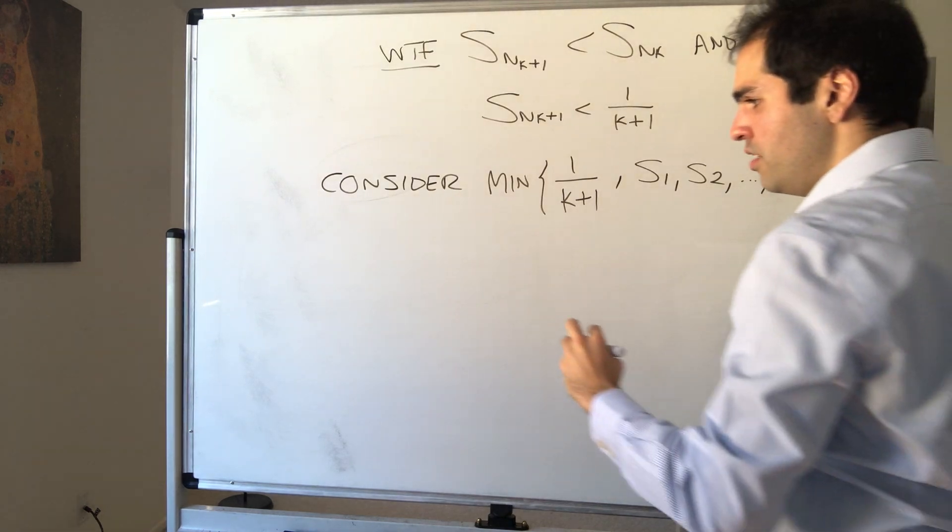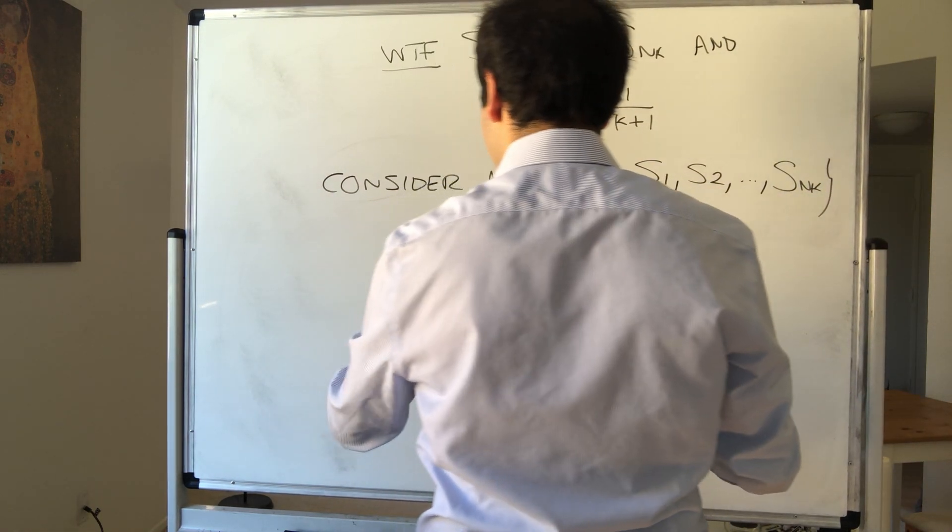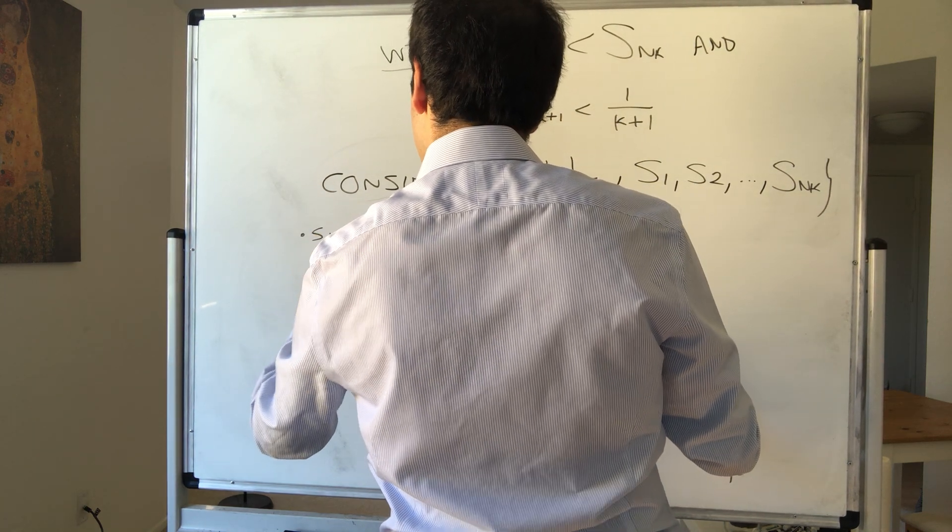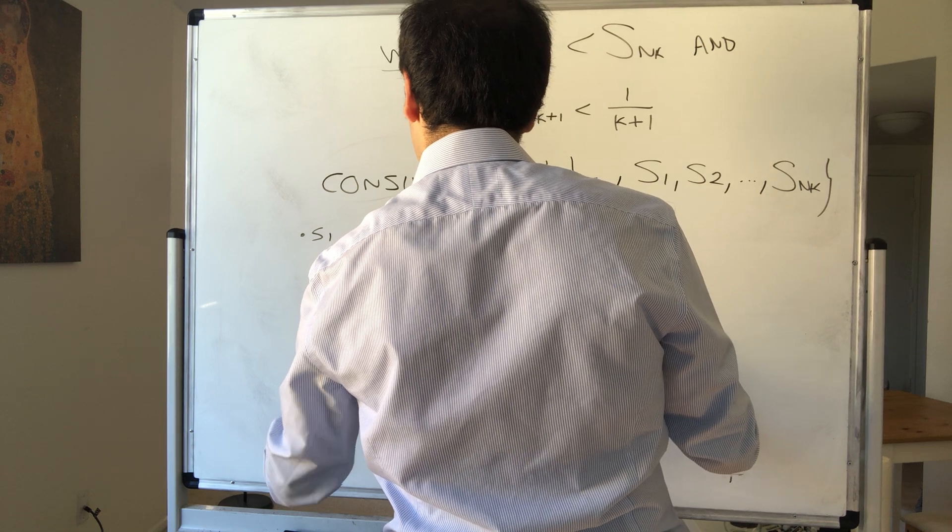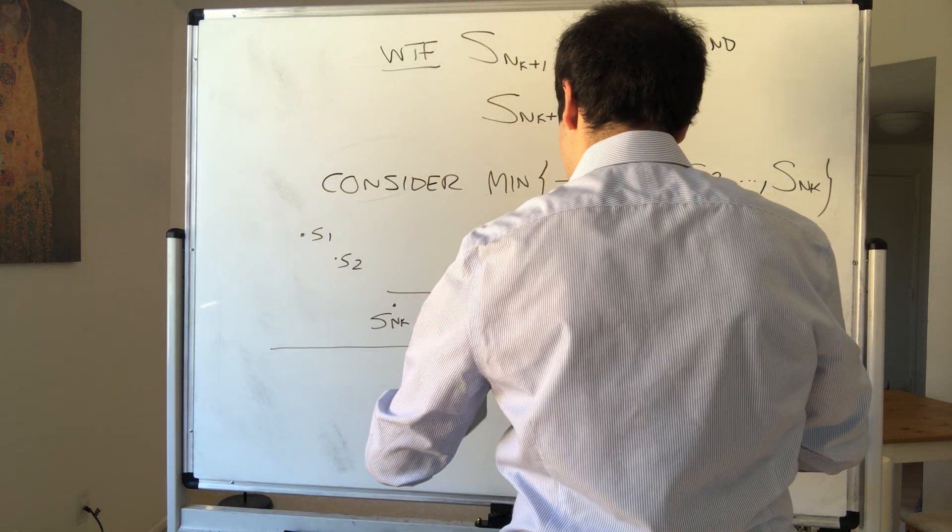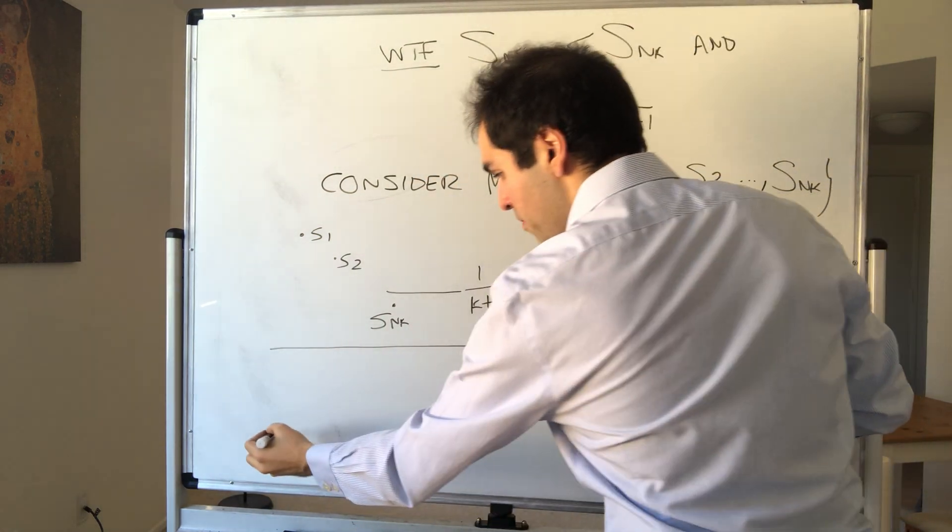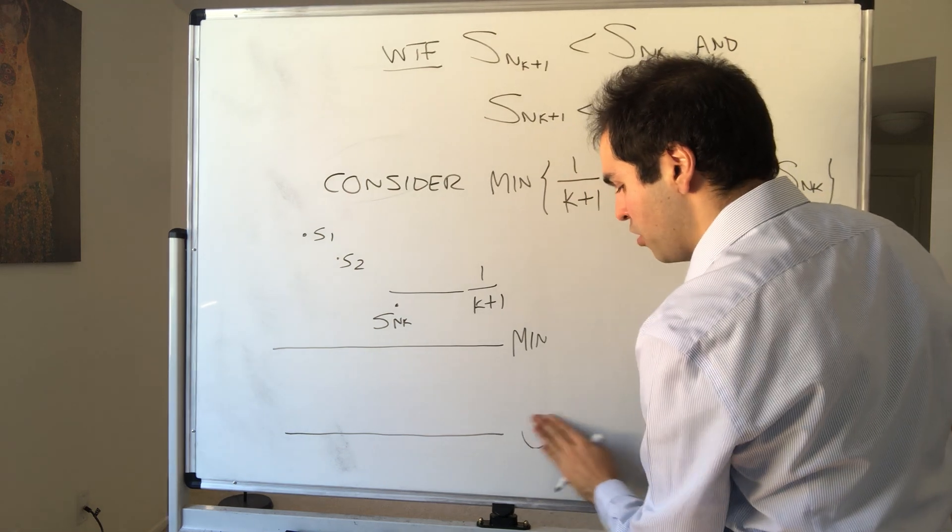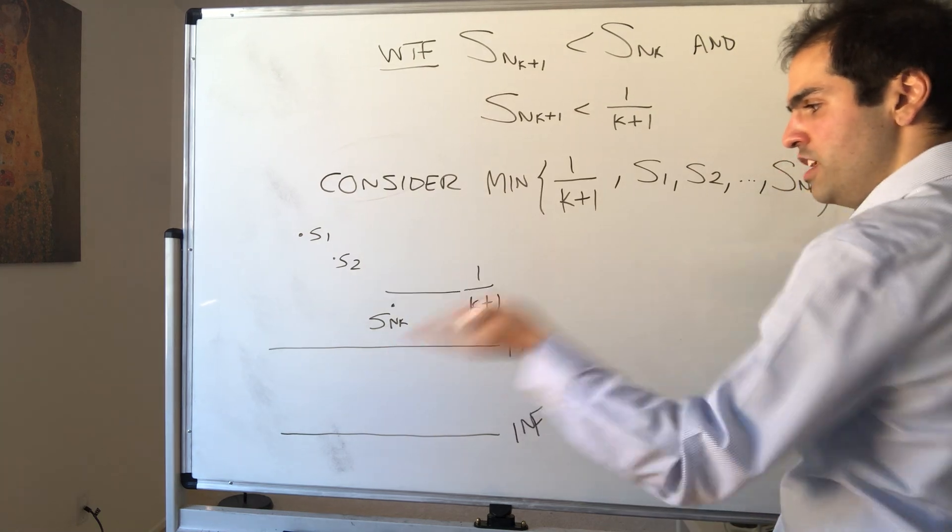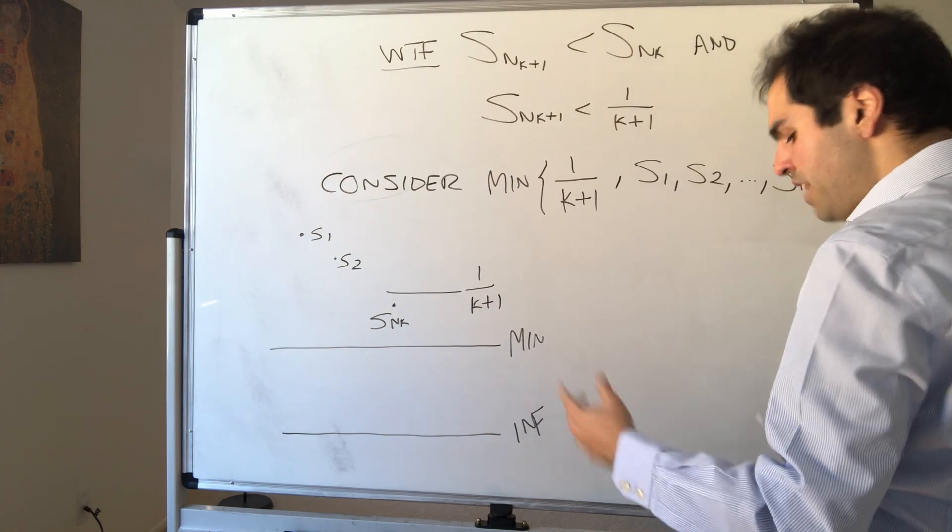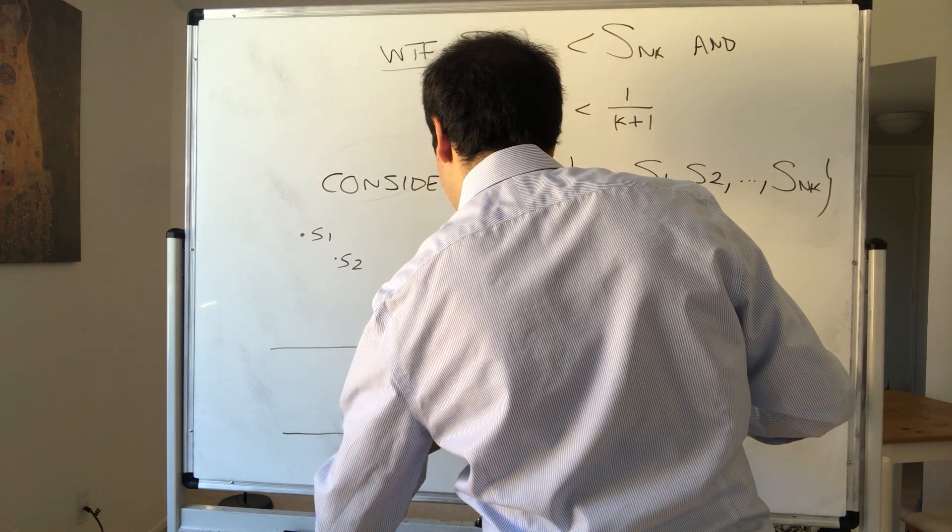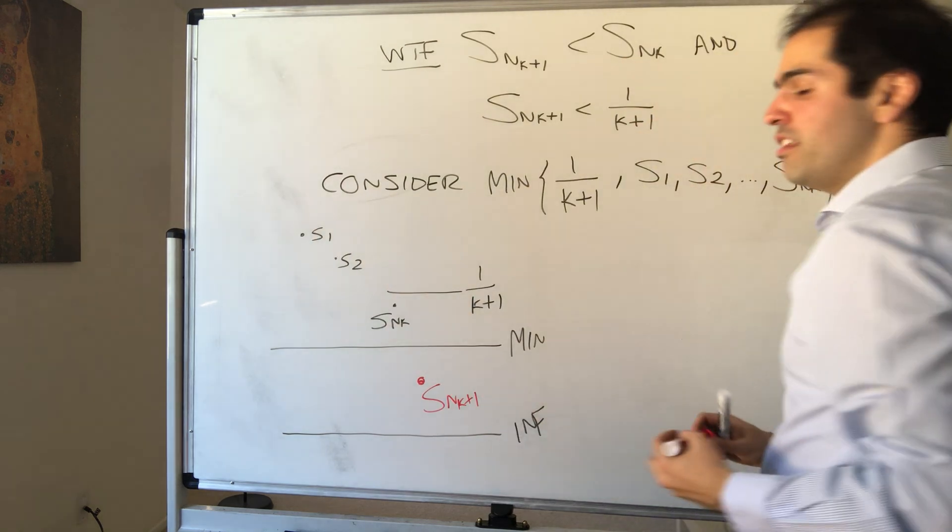So what is going on? So we have, again, this is 1 over k plus 1, and we have, let's say, S1, S2, maybe Snk, doesn't matter, and let's consider the minimum of them all. Now the minimum is greater than 0, which is the infimum. So again, the minimum of all those numbers is greater than the infimum of all the Sn, so definitely what we have, we will get a new value, Snk plus 1, that's smaller than all those ones.